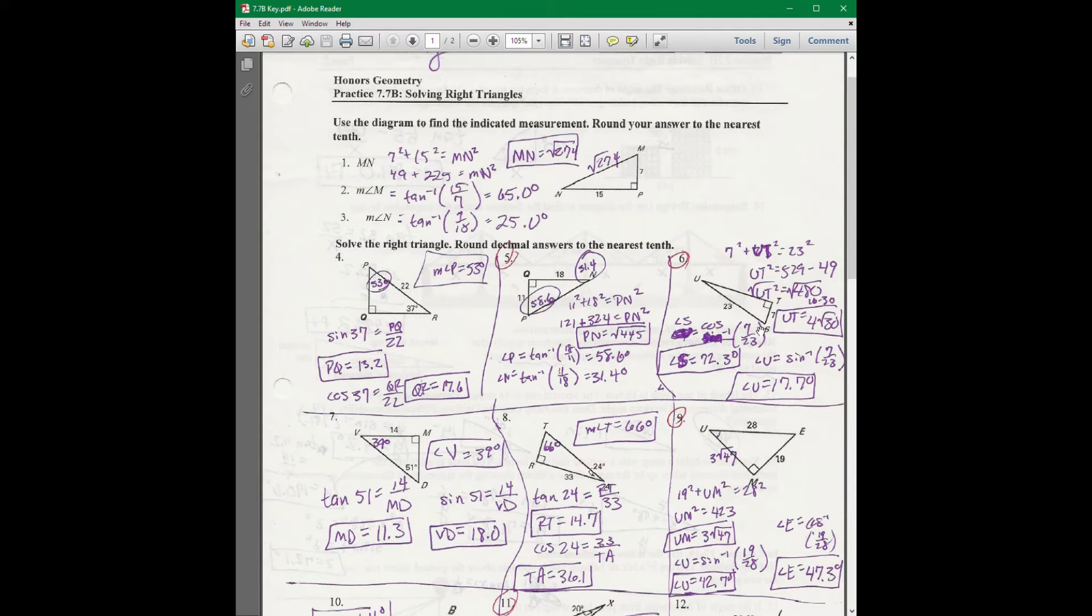In number 6, to find UT, again, use the Pythagorean theorem for that. When you get 4 times the square root of 30, to find angle S, I'm using adjacent and hypotenuse, that's cosine. The inverse cosine of 7 over 23 gives you 72.3 degrees.